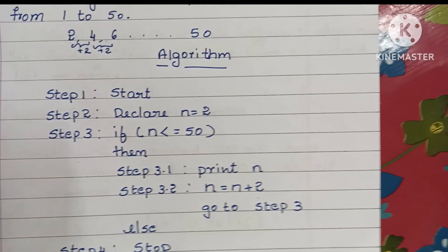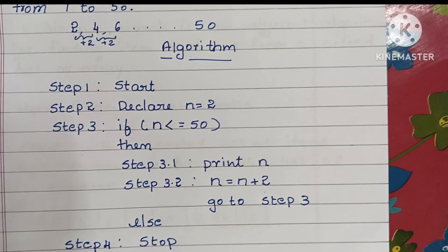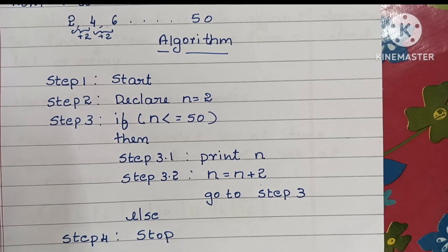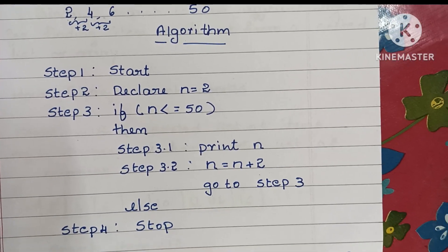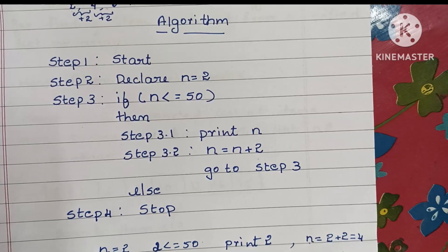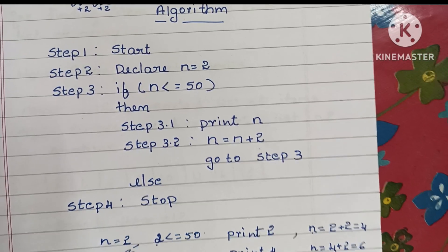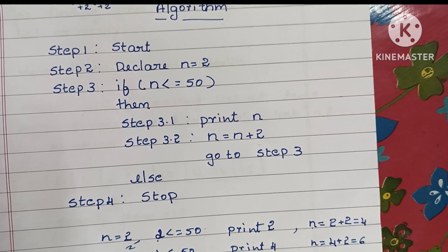This is the algorithm to print even numbers from 1 to 50. If you like this video, please like and subscribe to my channel. Thank you for watching.